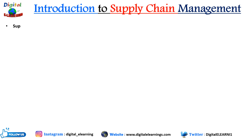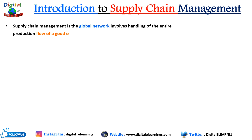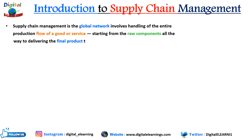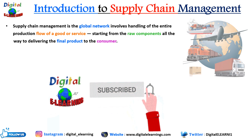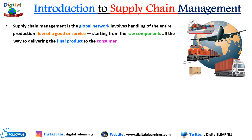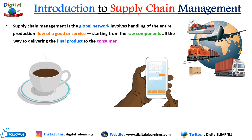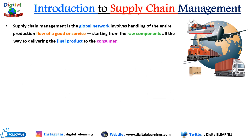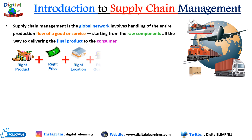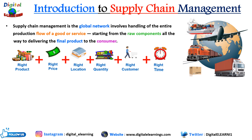Supply chain management is a global network which involves handling of the entire production flow of goods or services, starting from raw material all the way to delivering the final product to the consumer, with the aim to match the supply and demand. Supply chain management is essentially the backbone of modern industry, and every company is somehow involved in one or more supply chains. In short, it is about delivering the right product at the right price, at the right location, in the right quantity, to the right customer, at the right time.